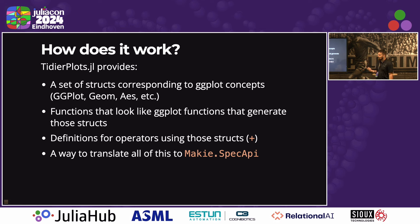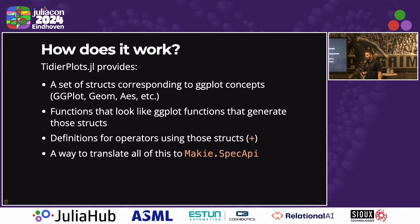That structure that I had, those 100 lines of Julia code, is essentially still how the package works, just with a lot of extra conditionals on it. It's still just a set of structs corresponding to the ggplot concepts, functions that look like the ggplot functions that generate those structs, definitions for the operators, and instead of translating it into algebra of graphics, I now go directly to the Mackey's spec API.